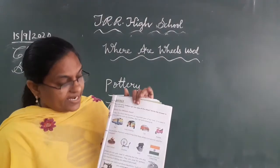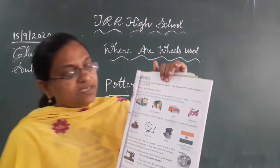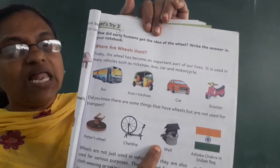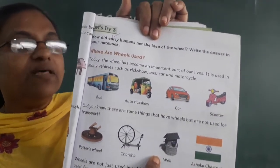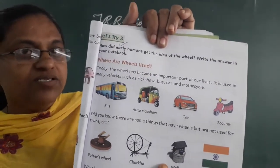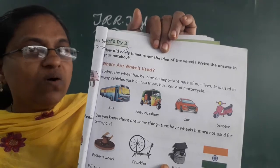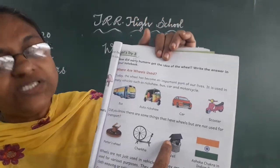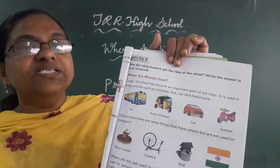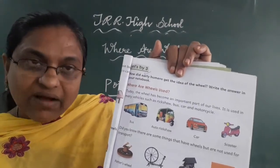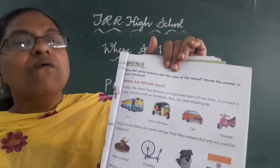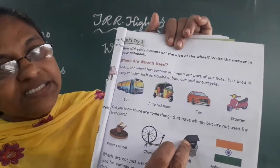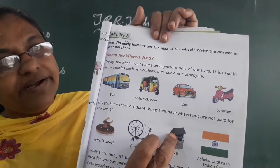Wheels are also used in wells. Do you know what is a well? There is water in the well. To fetch the water from the well, you should use the wheel. They arrange a small wheel to take out the water from the well.